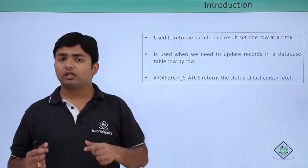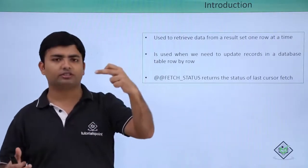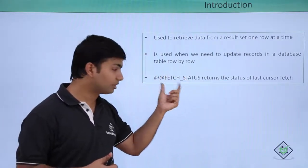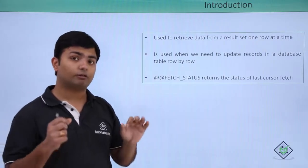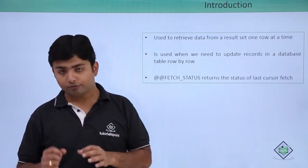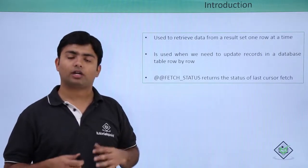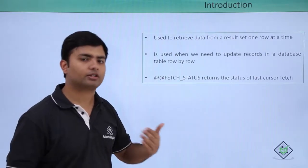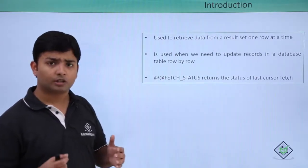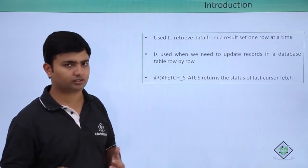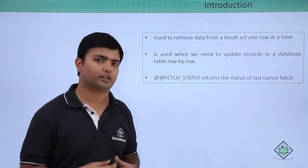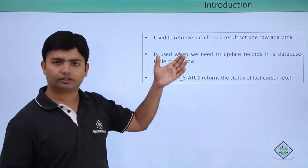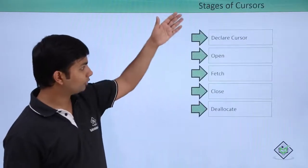At any given time during fetching, we have a result set and the cursor is pointing to one record at a time. We can query the fetch status, which returns the status of the fetching made by the cursor. If it returns 0, that means we successfully got data from the result set and we can proceed by reading it and doing any operation we want. But if there is no data left in the result set, the fetch status will return -1.